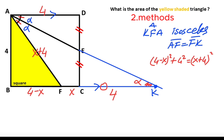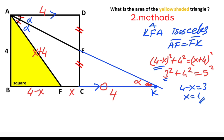If you notice, this equation matches the 3-4-5 special triangle relationship. So 4 minus x must equal 3, therefore x equals 1 unit. Here is 1 and here must be equal to 3, so the yellow shaded area equals 6 square units.